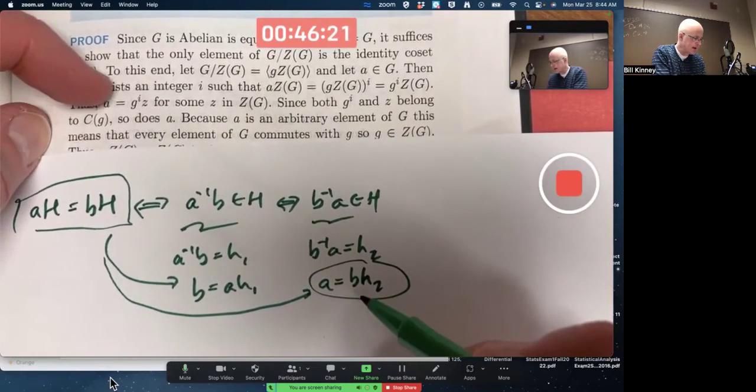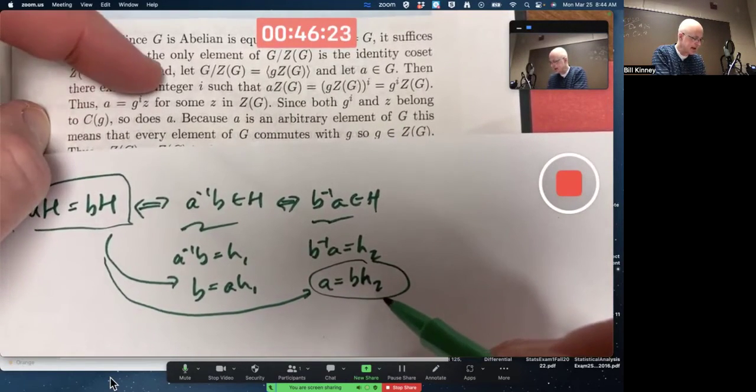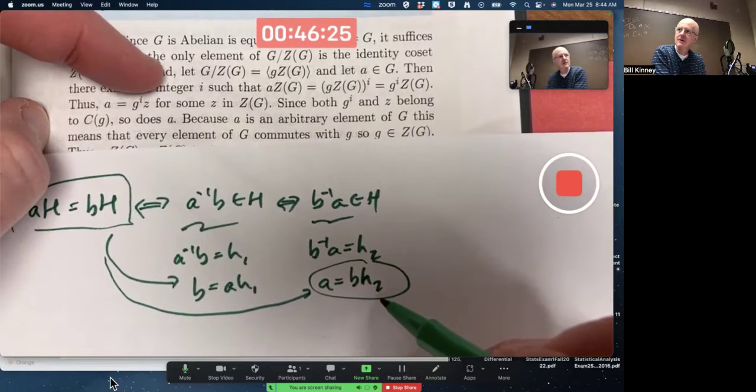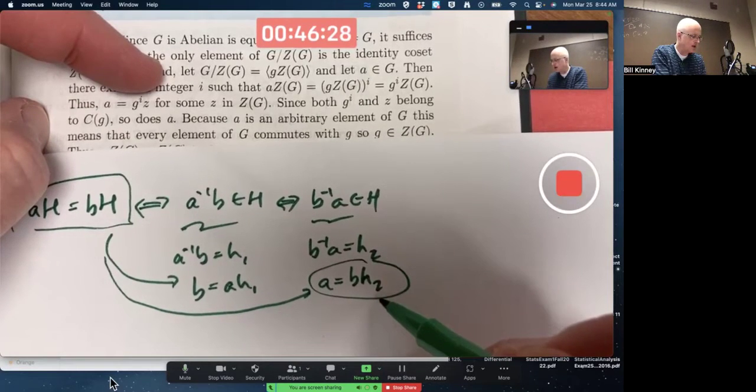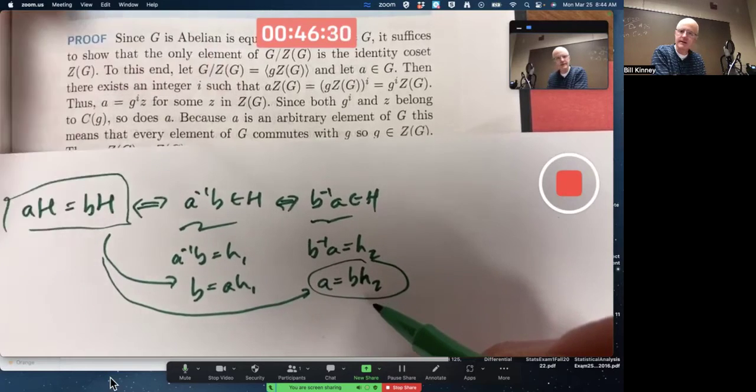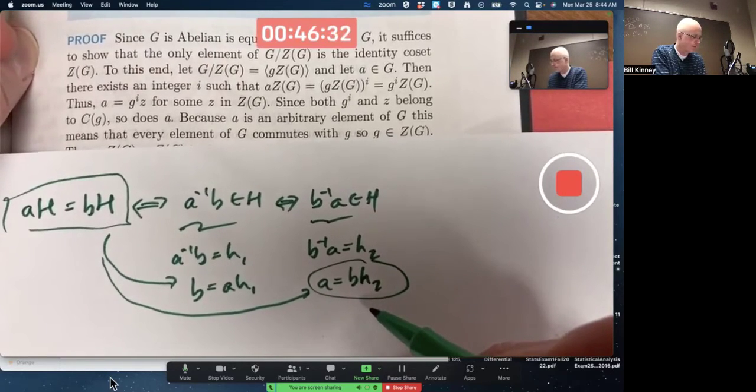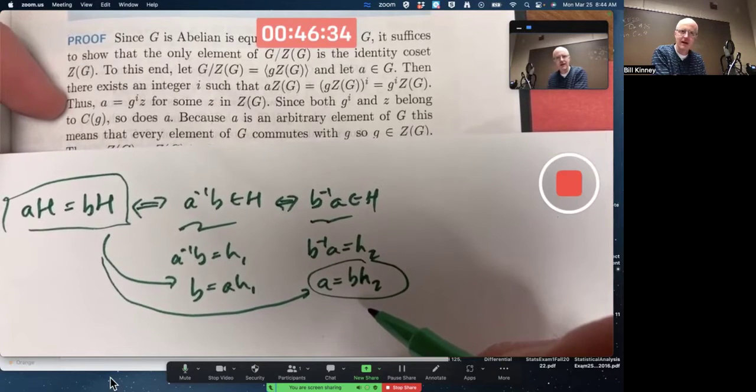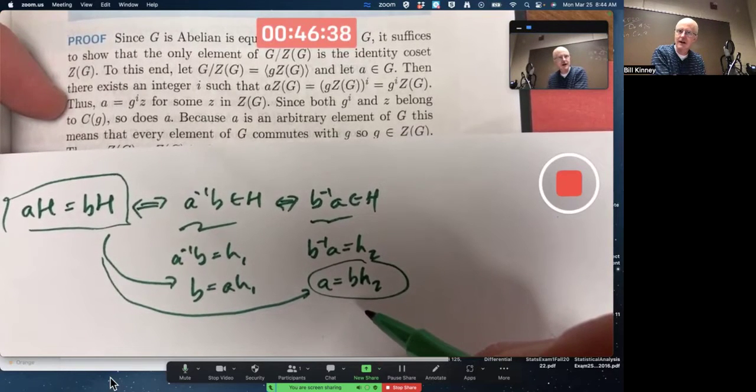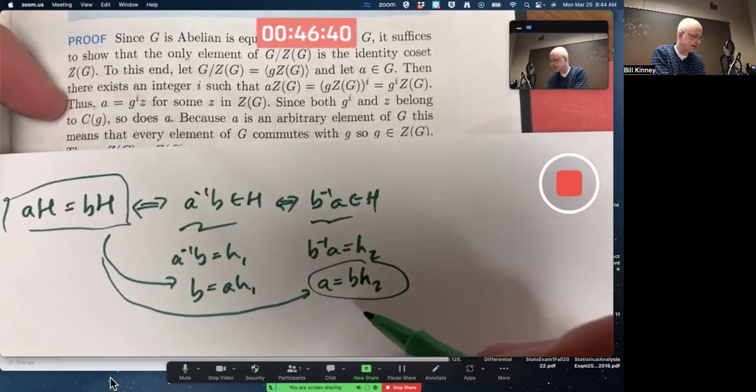That's like this statement right here. We've got the a. The b is the g to the i. The z is the h2. H, capital H, is the center in this case. That's the key step that might be the most difficult to realize. You've got to remember properties of cosets to see that.